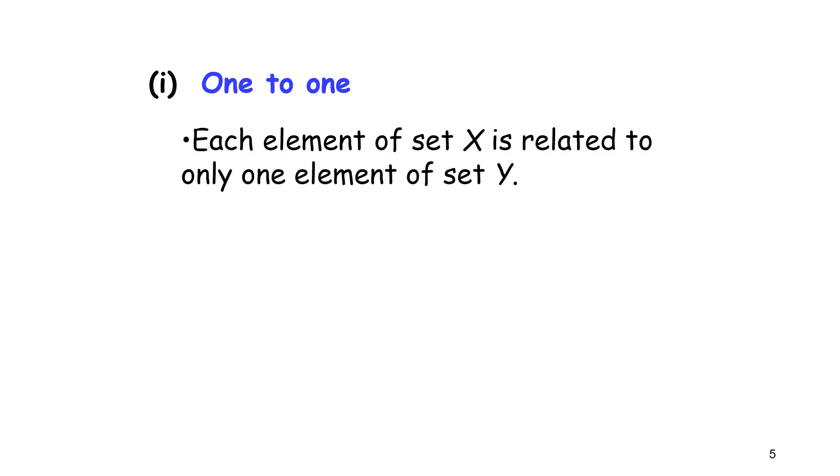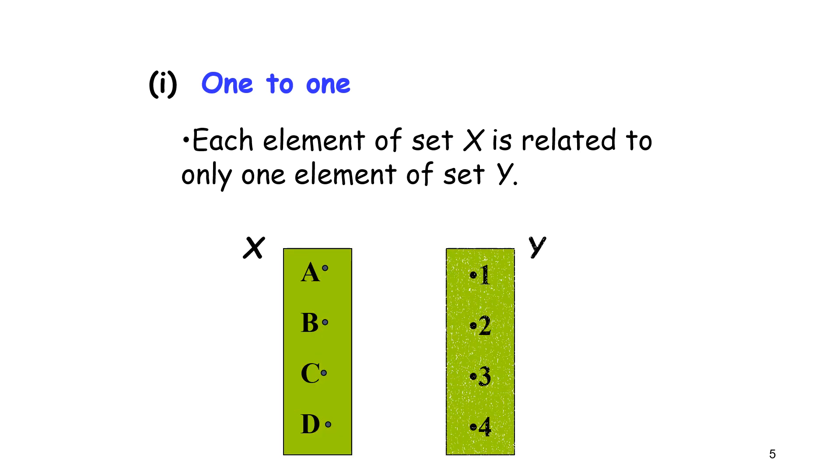One-to-one relation. Each element of set X is related to only one element of set Y. We can see from the picture, element X has A, B, C, D. Element Y has 1, 2, 3, 4, and they only map to one element.